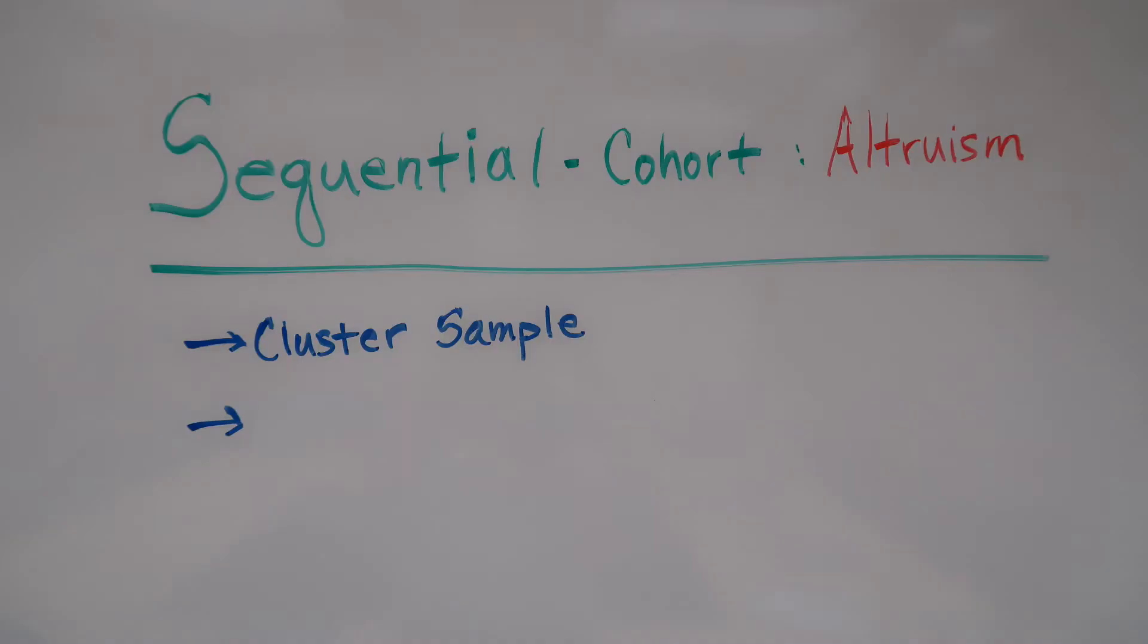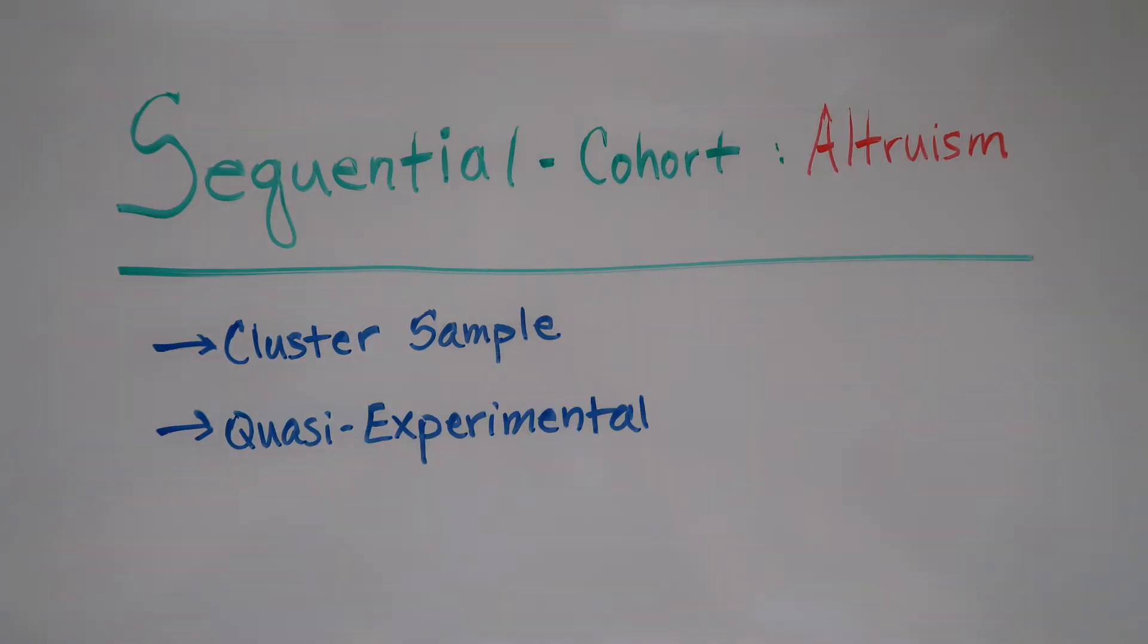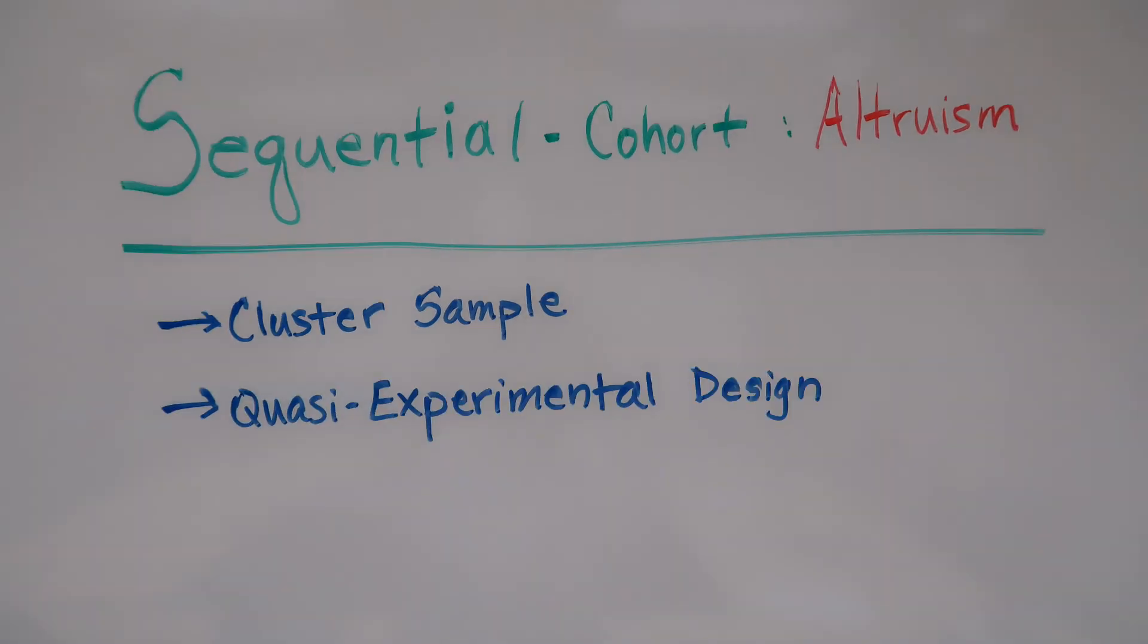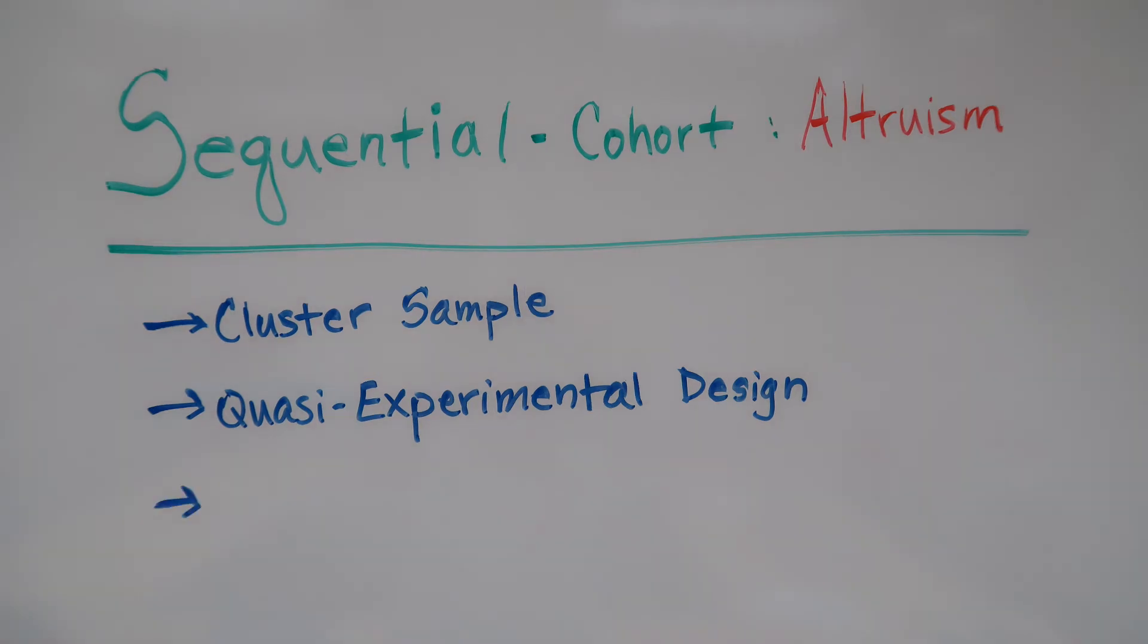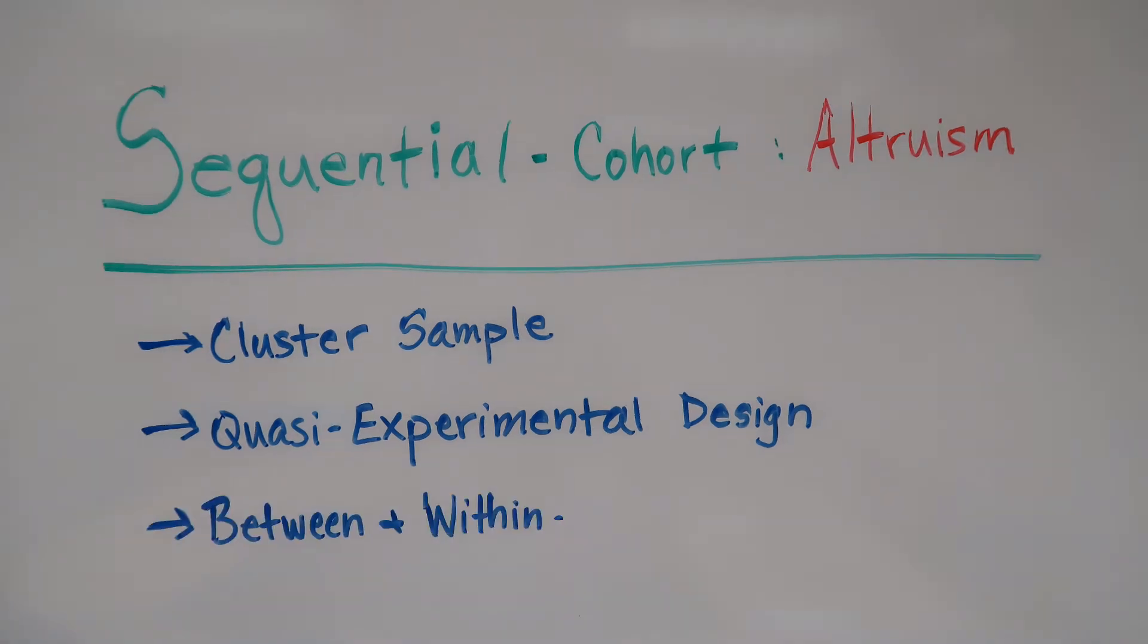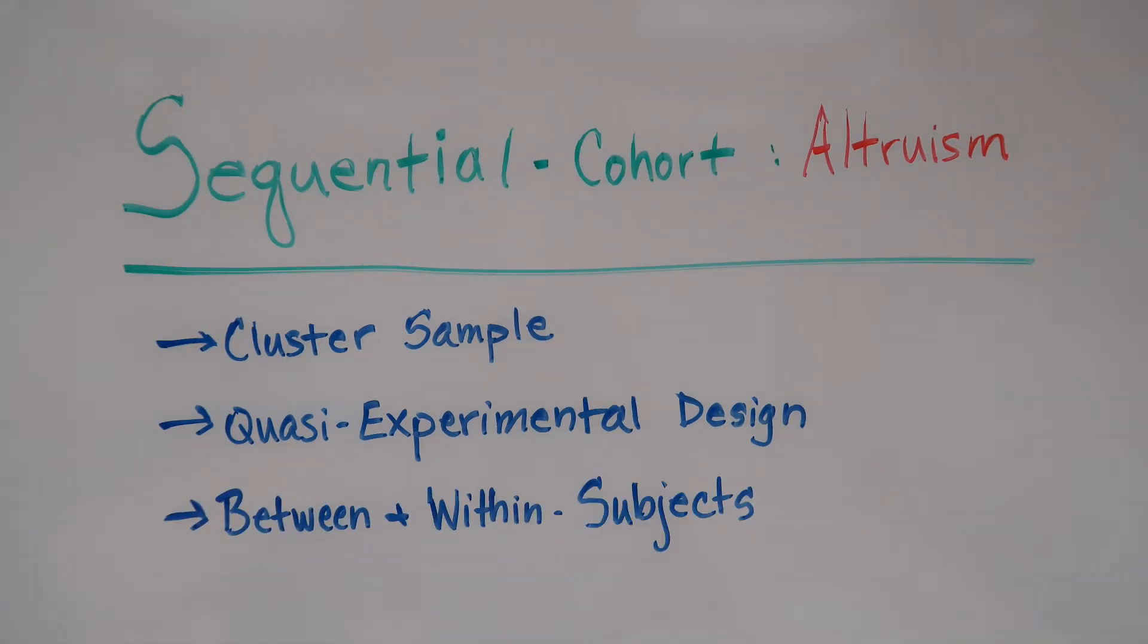This is a quasi-experiment design, as age is a subject variable and cannot be manipulated. It's also a between and within subjects design. There are three different samples, which are between subjects, that are tested as they age at three year intervals, which is considered within subjects, over a period of six years.